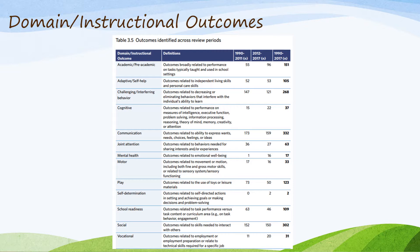I like the information provided in this chart. It allows me to know that there are 332 research articles that were based in communication — it tells me how much research there was in that area. I know that vocational outcomes, the vocational domain instructional outcome, has less at 31.